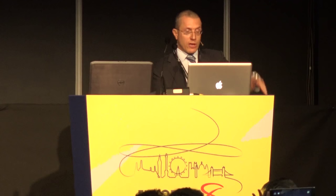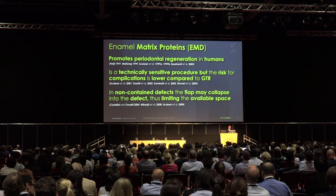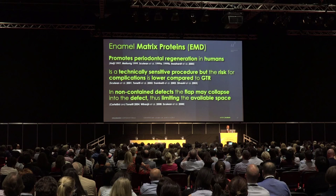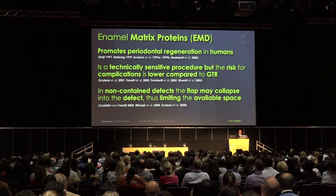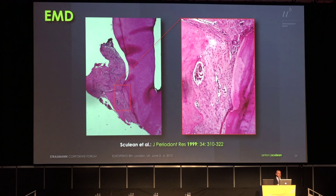Summarizing the current evidence, we can say that enamel matrix proteins promote periodontal regeneration in humans. However, technically it is still a sensitive procedure, though lower than with GTR. In non-contained defects, the flap may collapse because the material doesn't have enough stability. Histologically, as you can see on this slide, we have a comparable outcome to GTR membranes — cementum, periodontal ligament, and bone formation that you can observe at high magnification to the right.